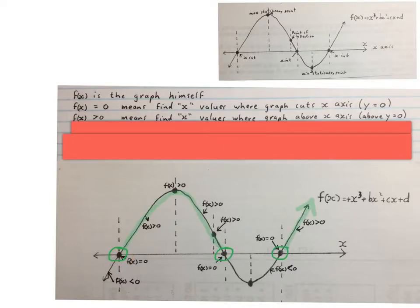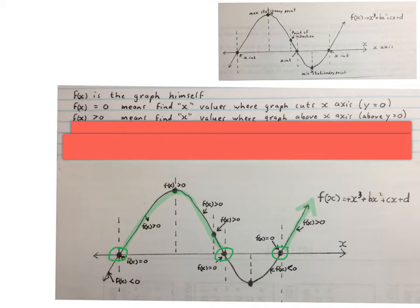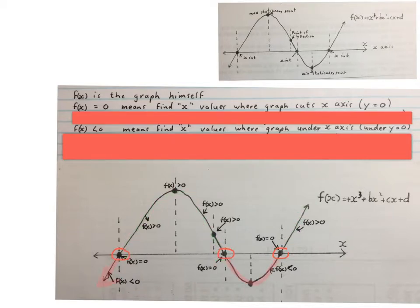The next notation, f(x) is bigger than zero, means find the x values where the graph is above the x-axis, where y is greater than zero — that is the red part there and the red part there, excluding the circles. The next one, f(x) is smaller than zero, means find the x values where the graph is under the x-axis — that is the red part there and the red part there, excluding the circles again.